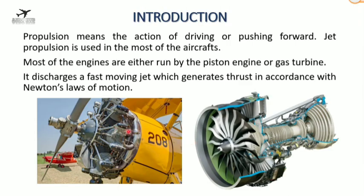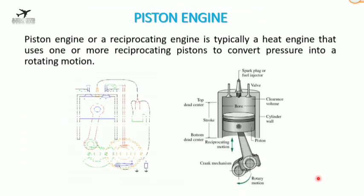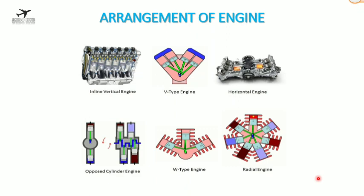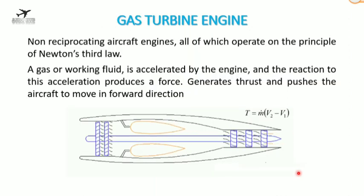This is a typical piston-propeller engine in a radial arrangement. Here are the different types of cylinder arrangements: inline vertical engine where all cylinders are in a vertical inline configuration; V-type where engines are placed in a V shape; horizontal where cylinders are horizontal to one another; opposed cylinder where cylinders are placed opposite to each other; W-type; and radial engine where cylinders are placed in a radial manner.